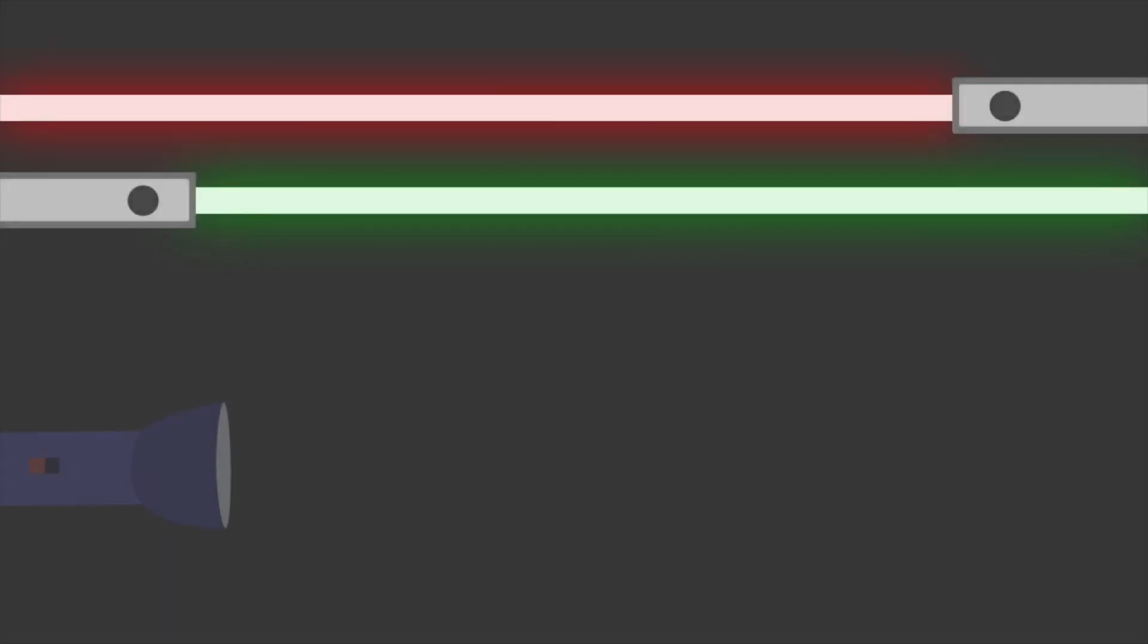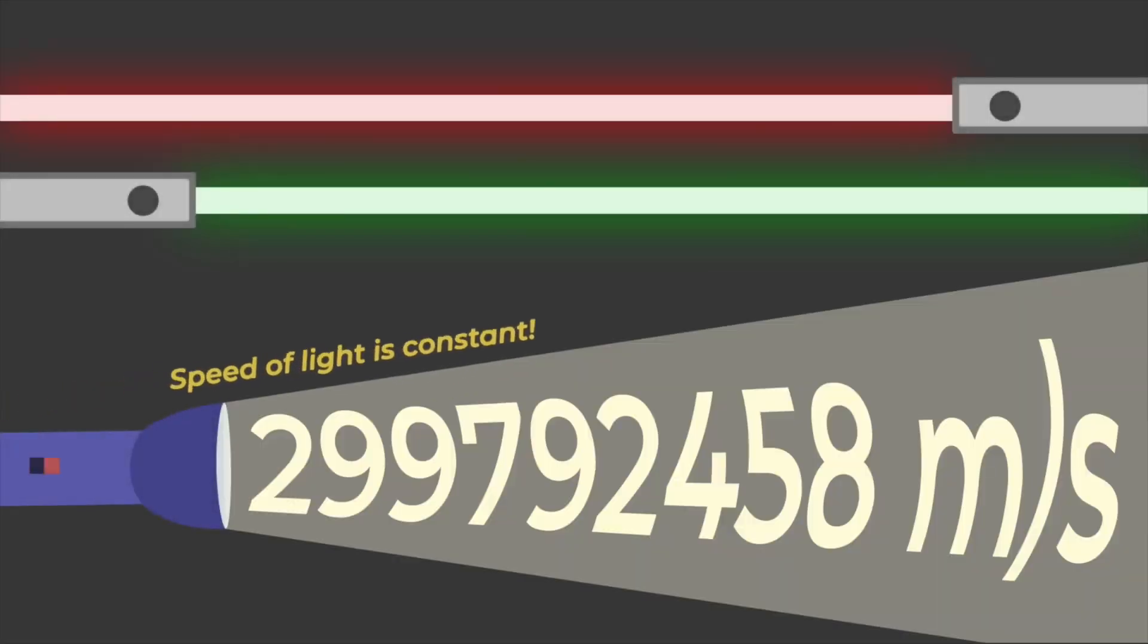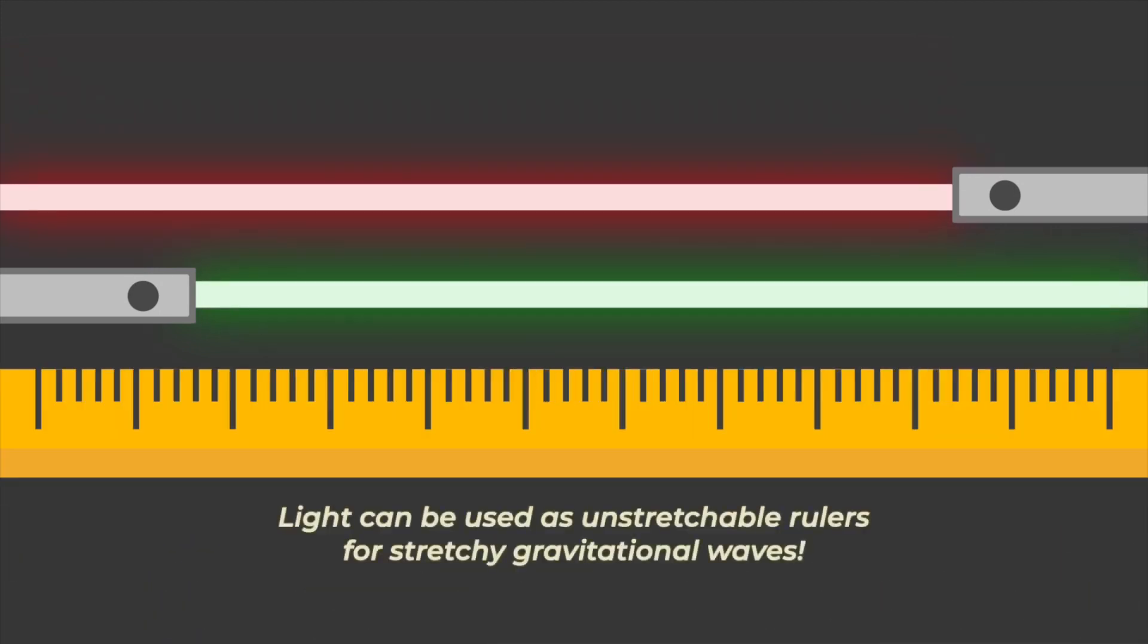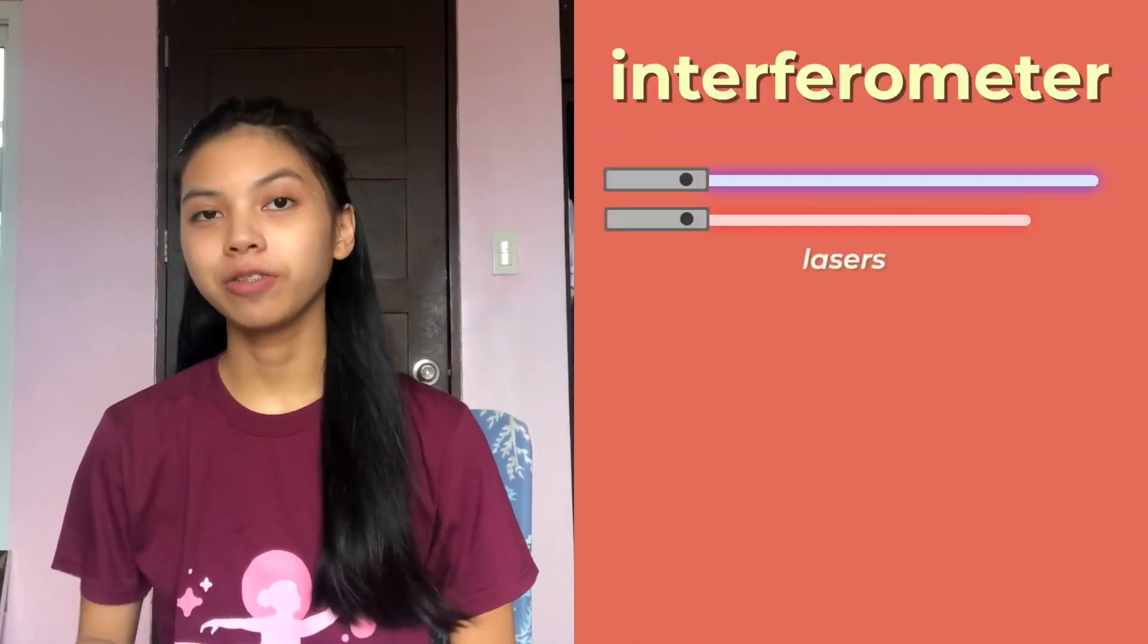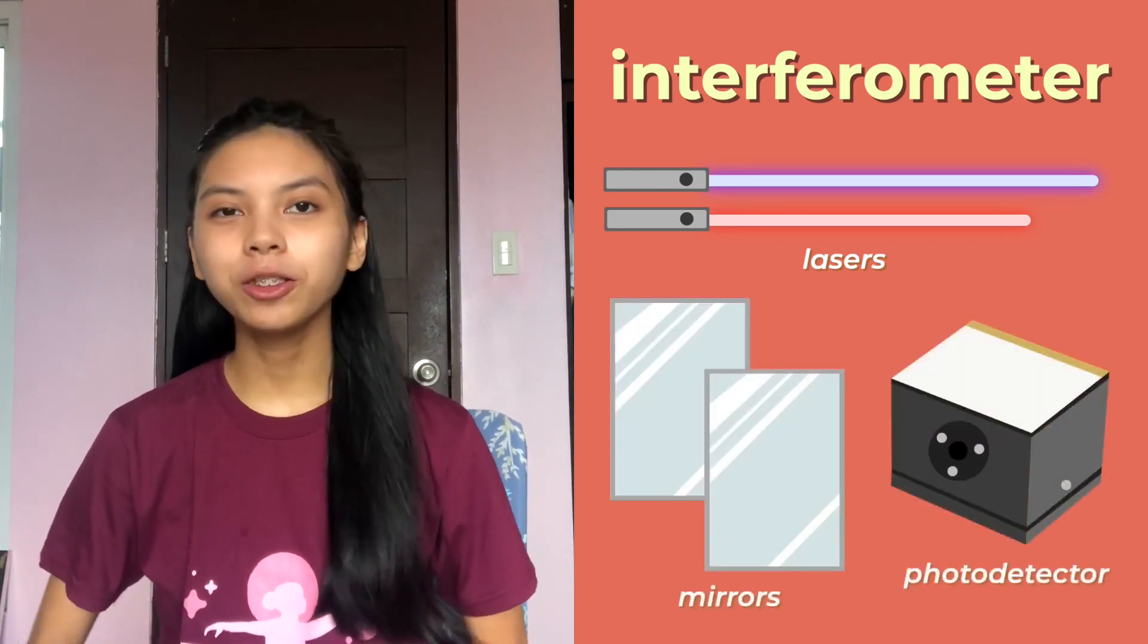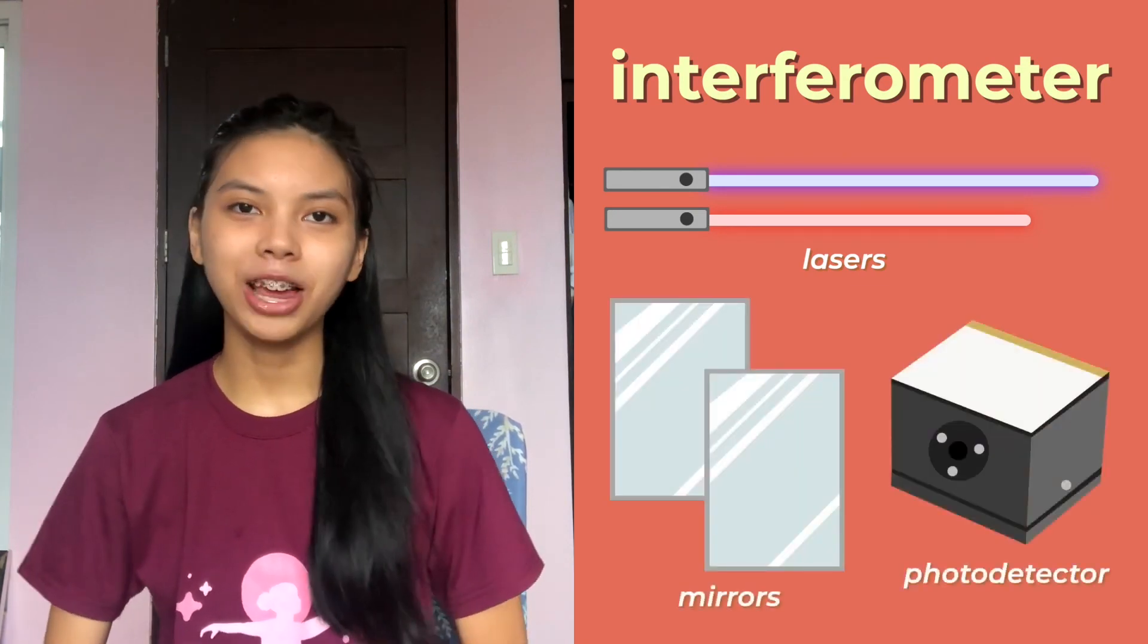Meanwhile, lasers are responsible for emitting light, which does not get stretched, making it the perfect tool for measuring gravitational waves. These gravitational waves can be recorded in observatories, with the help of a device called an interferometer, composed of lasers, mirrors, and a photodetector, all enclosed in a big quiet area. The detection of gravitational waves all lies in the presence of a resulting light beam.